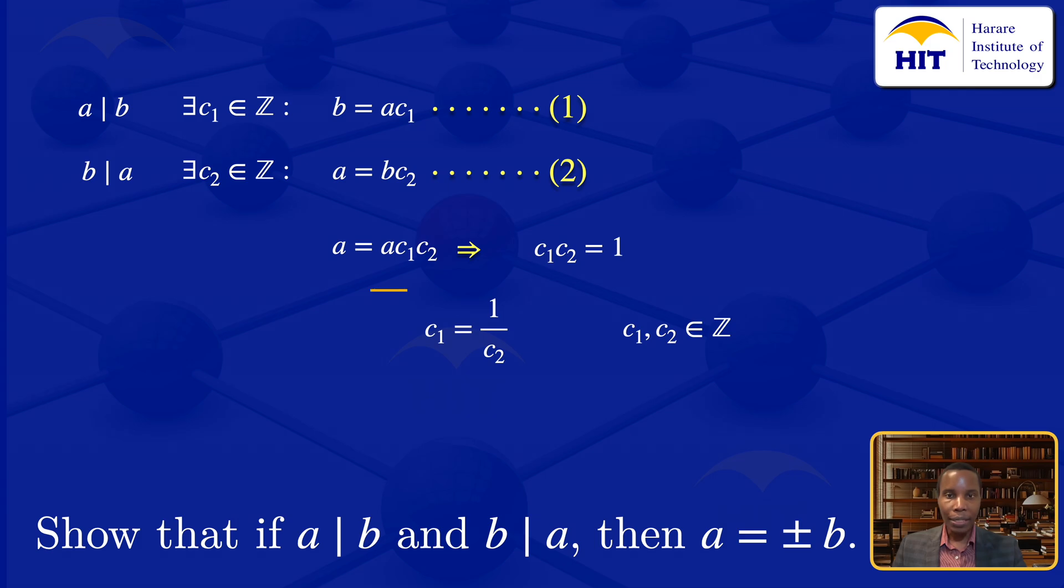Looking at this expression, C₁ = 1/C₂ can only be an integer if C₂ = ±1. Otherwise, if C₂ is not ±1, then C₁ will not be an integer. It would be 1/3, 1/4, 1/5, and so on, which are not integers.